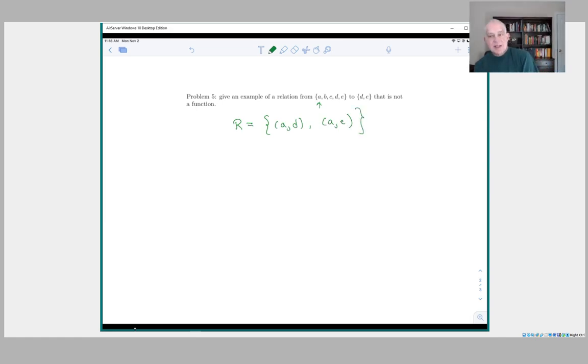Remember that a relation is an arbitrary subset of the product. It doesn't have to mention any elements. So here we've only mentioned two elements. This is clearly not a function because we have the same element of the domain A related to both D and E. So that gives us a very simple example of a relation which is not a function.